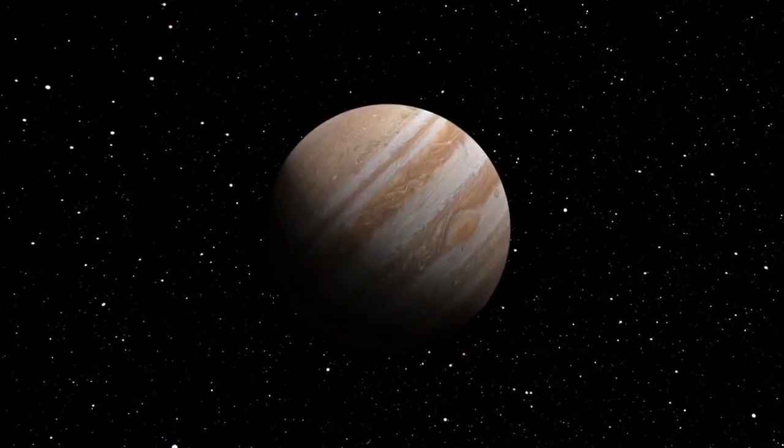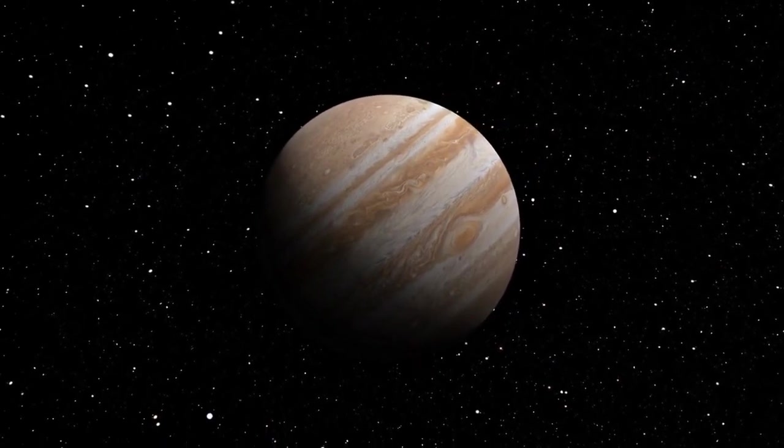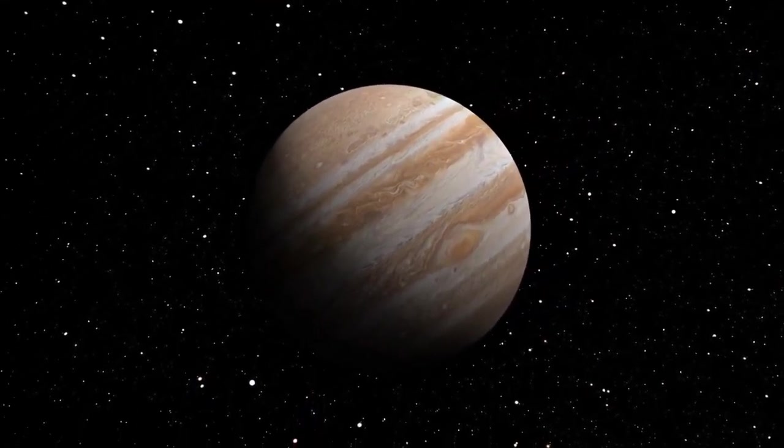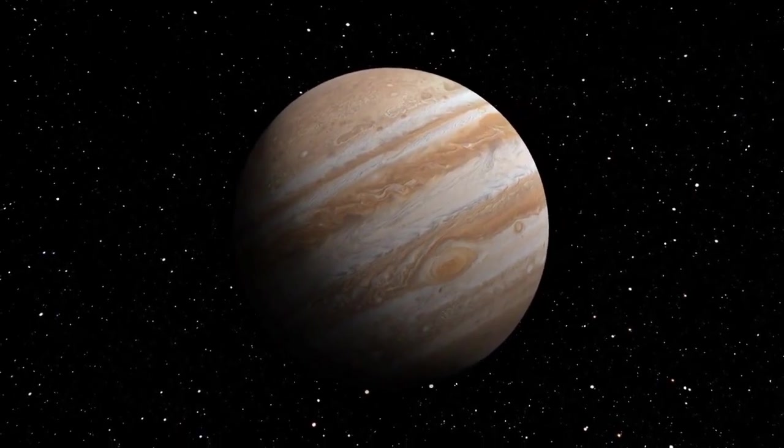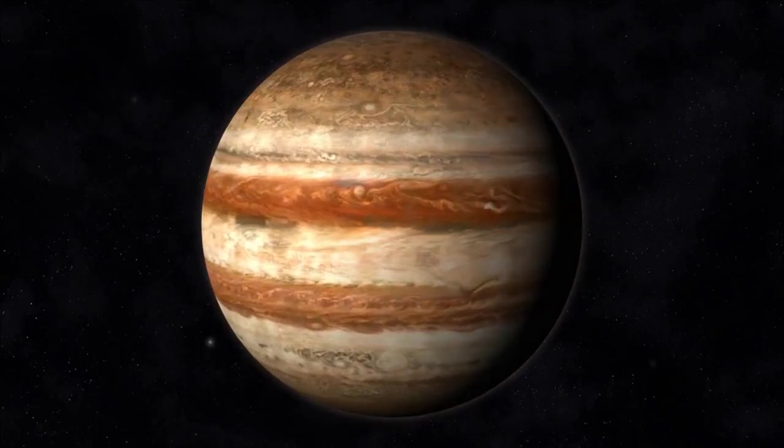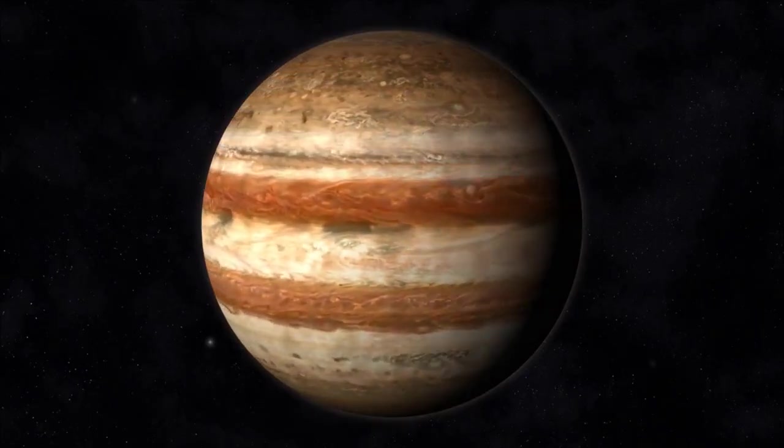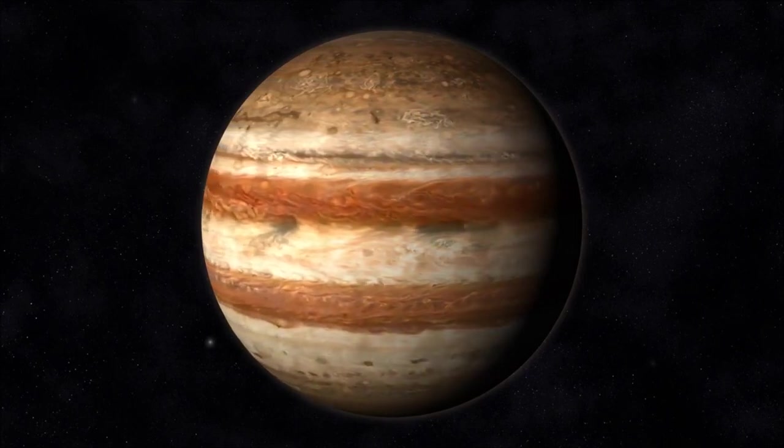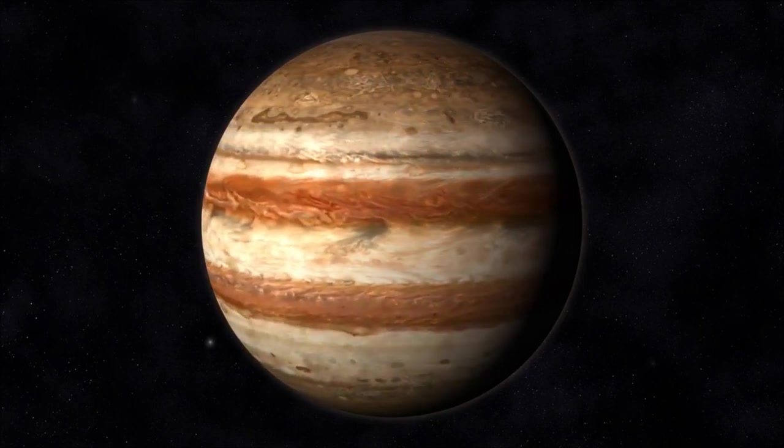Its mass is two and a half times that of all the other planets combined, and its magnetic field is an incredible 14 times stronger than Earth's. Jupiter's days are incredibly short. With a rotation period of only 10 hours, Jupiter is the fastest spinning planet in the solar system.